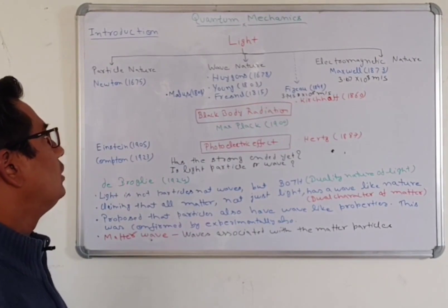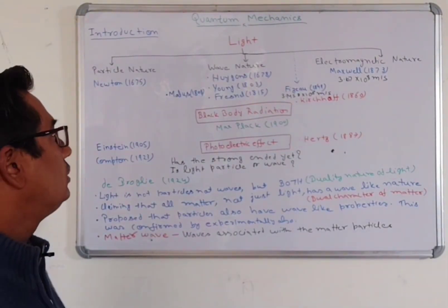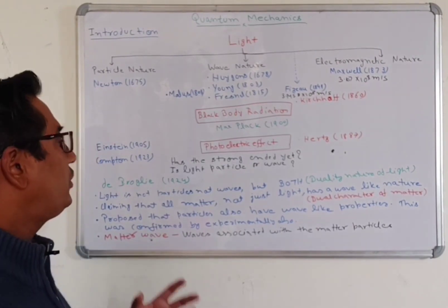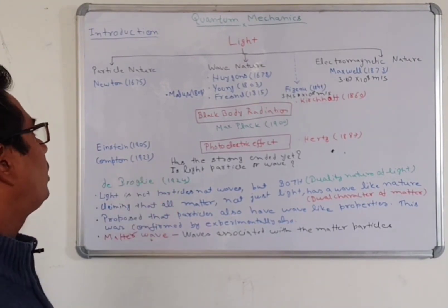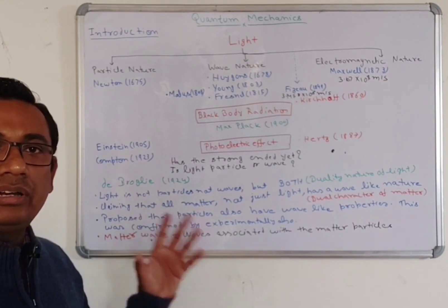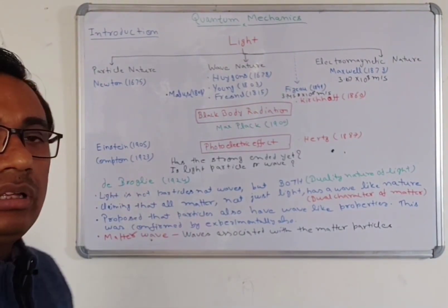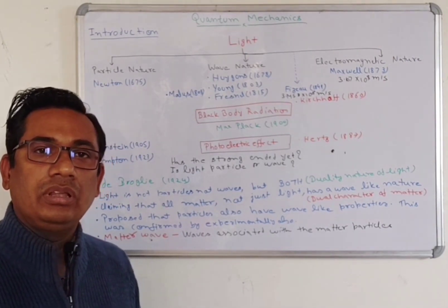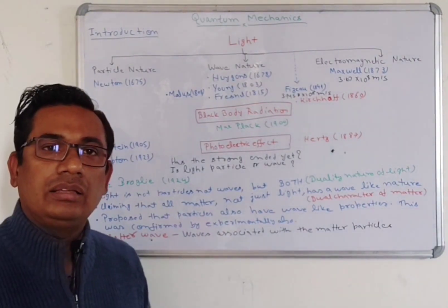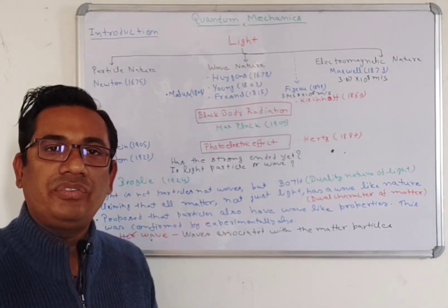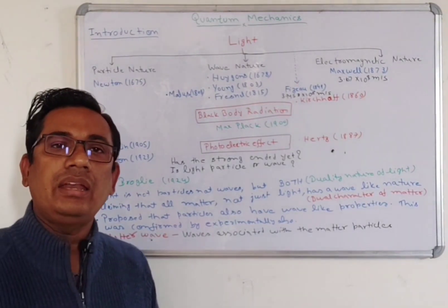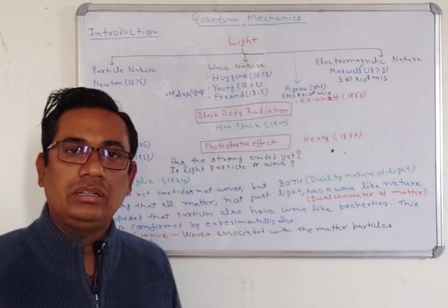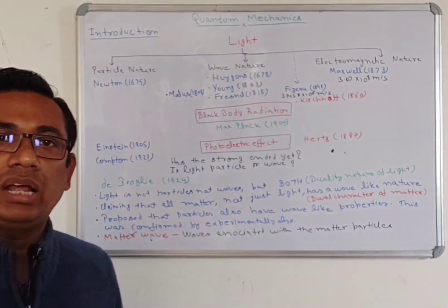Here I have written that the nature of light is divided into 3 parts, which is based on the history. The first is the particle nature of light. Newton in 1675 introduced the particle nature of light and proposed the corpuscular theory. According to the corpuscular theory, light consists of a stream of tiny, light and elastic particles. He explained the law of reflection and also the propagation of light in a vacuum.